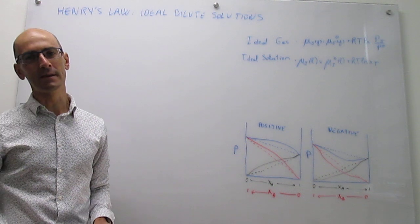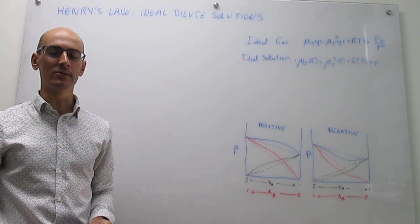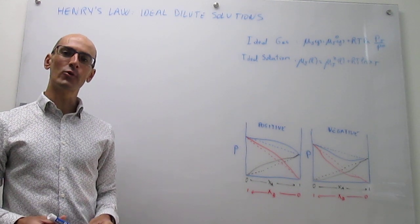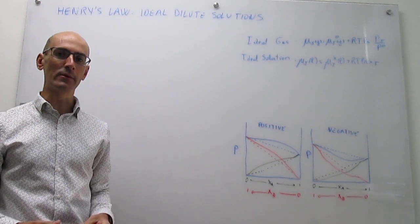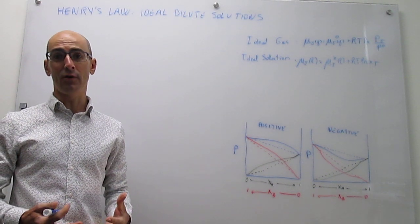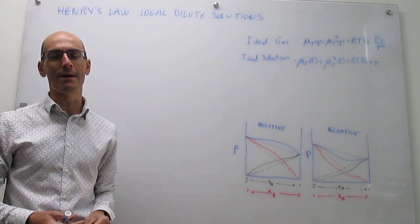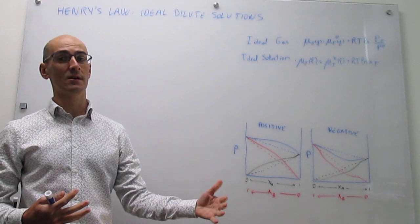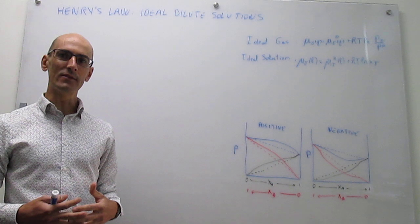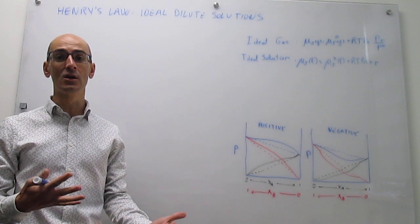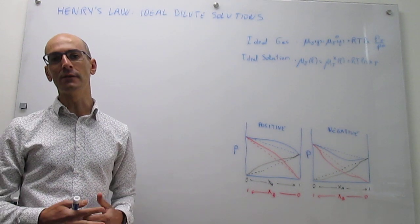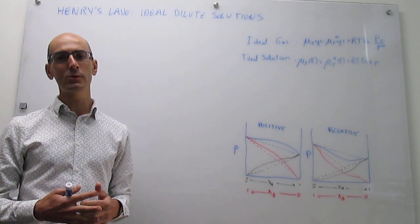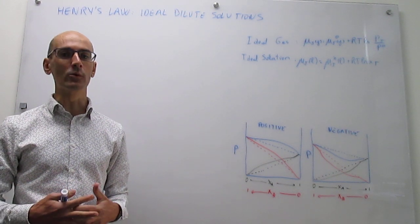In this video we review the concept of an ideal dilute solution and Henry's law. Our goal in the last few videos has been to write the chemical potential of a component in a mixture as a function of concentration parameters. Our overall goal is to understand how the chemical potential of a substance changes with concentration, so that we can understand properties of solutions and how they change depending on the concentration of each component. This chemical potential dependence on concentration will also allow us to understand chemical equilibrium better.